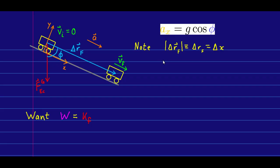We're almost finished — we just have some kinematics to do. Keep your eye on the prize because these arguments are getting a little complicated. Remember that all we're after is the work done by the force that is not parallel to the motion, and we've set it up so that equals the final kinetic energy.